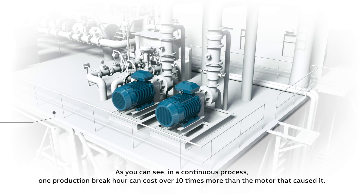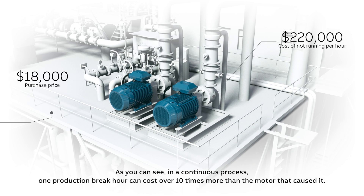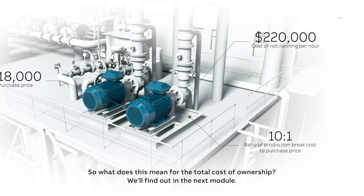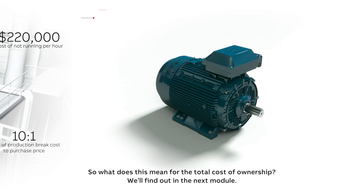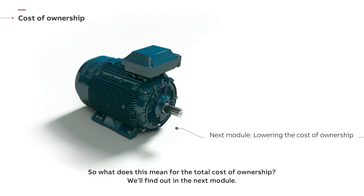As you can see, in a continuous process, one production break hour can cost over 10 times more than the motor that caused it. So what does this mean for the total cost of ownership? We will find out in the next module.